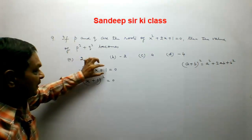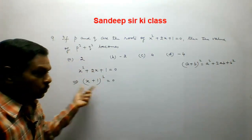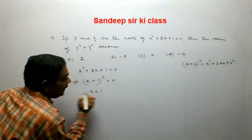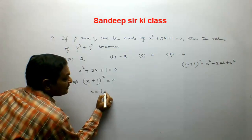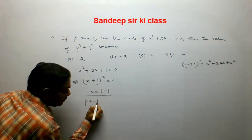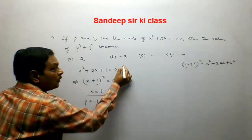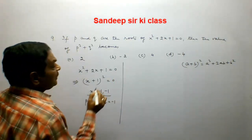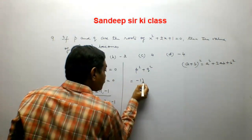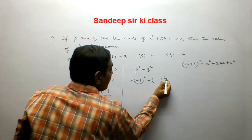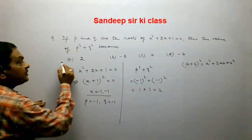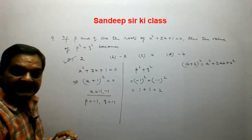So x² + 2x + 1 = (x+1)² = 0 gives x = -1 (repeated root). So p = -1 and q = -1. Therefore p² + q² = (-1)² + (-1)² = 1 + 1 = 2. Option A is the correct answer.